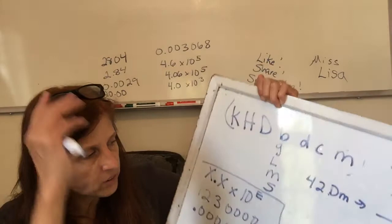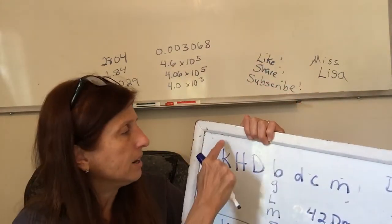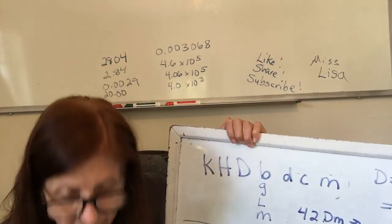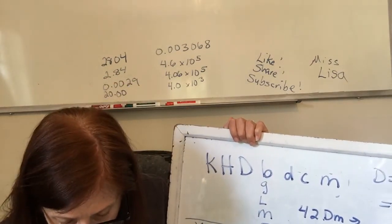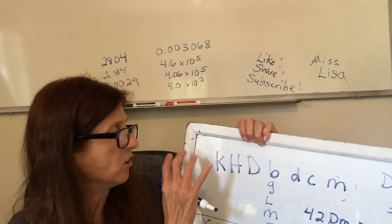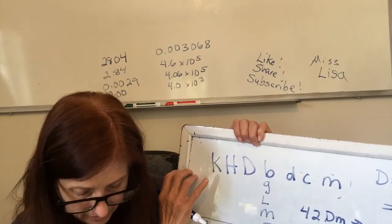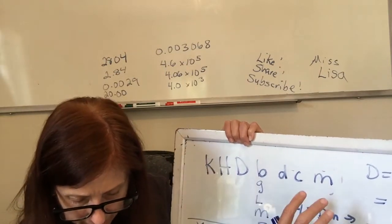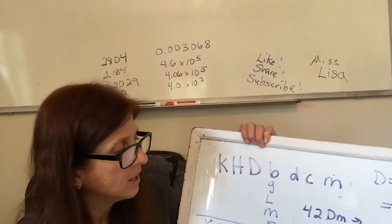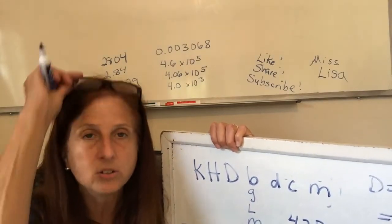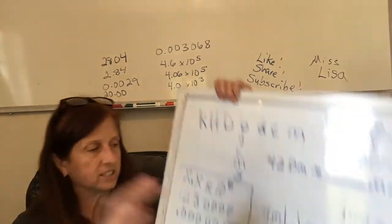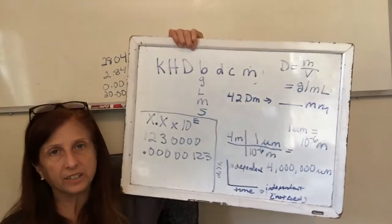In your book, it has units beyond King Henry's Daughter Bakes Delicious Muffins. You can see pico, nano, micro on the small side, and tera, giga, mega on the large side. To change those, you use a method called Dimensional Analysis, which can change any unit, anytime, anywhere.